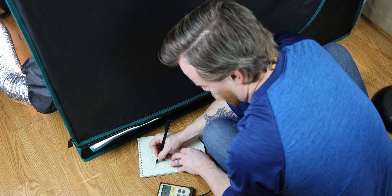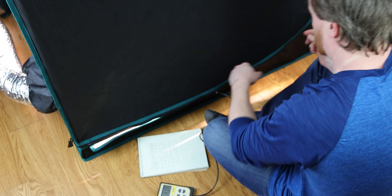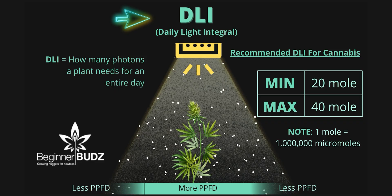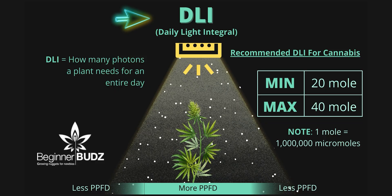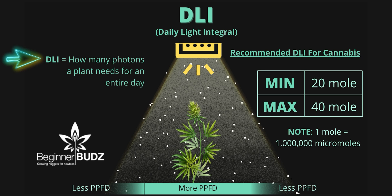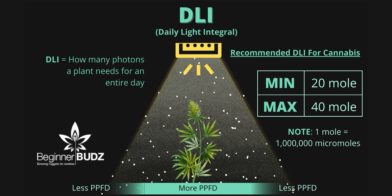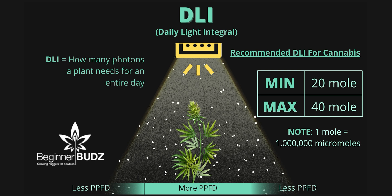All that aside, let's get to the fun stuff — recommended PAR levels. To first figure this out, we need to learn one last acronym: DLI, which stands for the Daily Light Integral. This number represents the amount of light a plant needs in a day, and is usually expressed as a range showing both the bare minimum and the absolute maximum the plant can take. The max can actually be higher, but only if other parameters are artificially adjusted — mainly CO2. The DLI for cannabis is 20 to 40 moles.